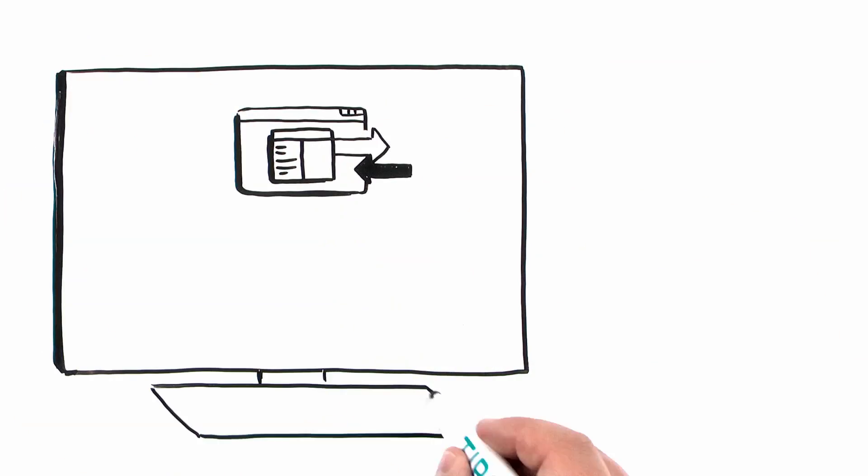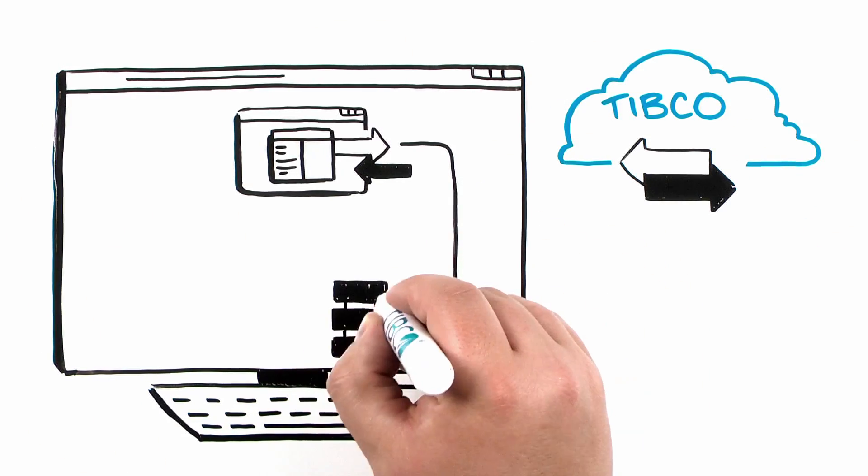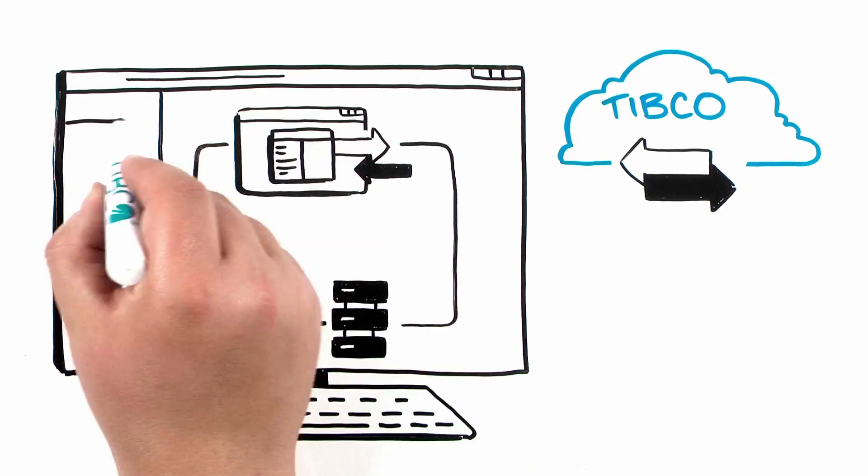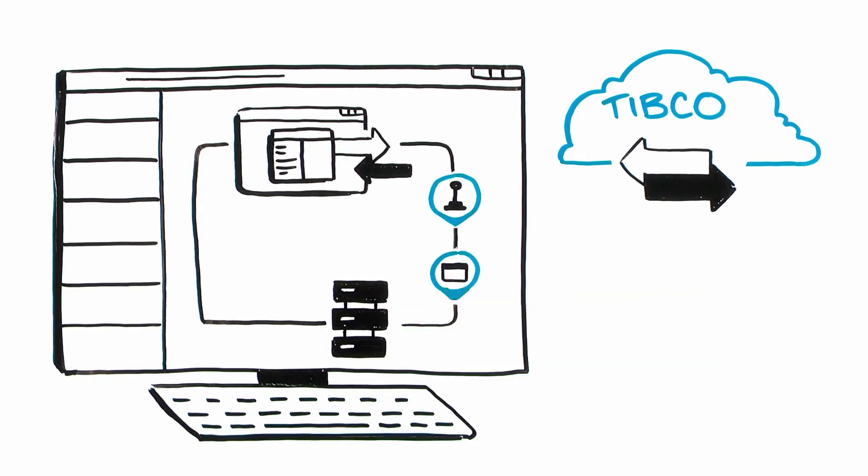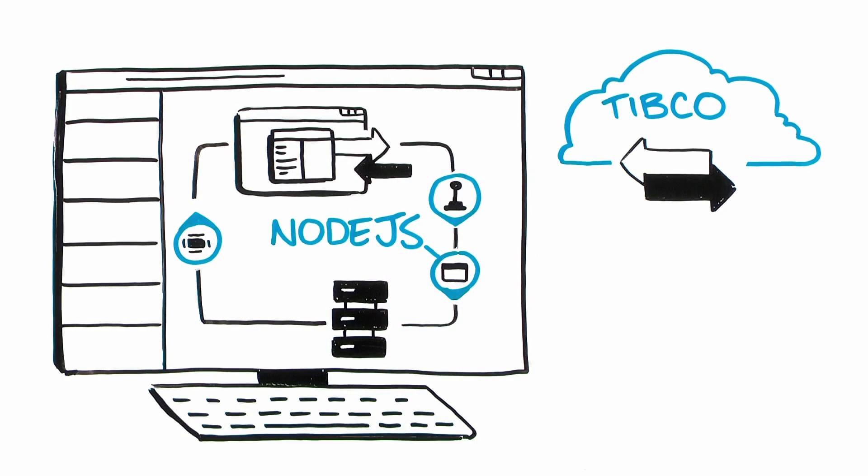Once your API is in use, TIBCO Cloud Integration Microflows allows you to modify its behavior for specific use cases without reconfiguring back-end services. You simply add stages to change the API's actions. It's also possible to use existing Node.js modules for this purpose.